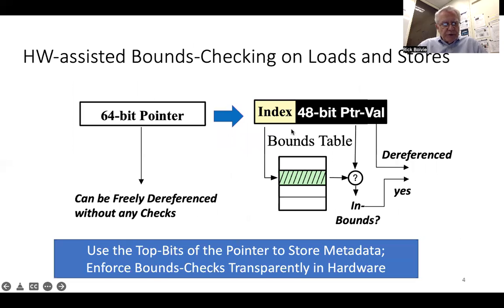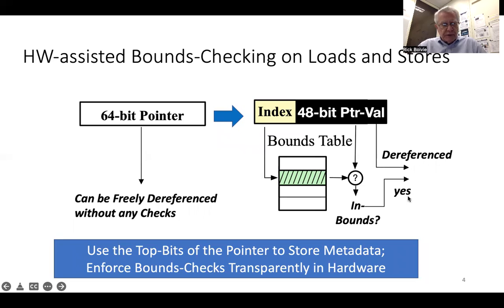In our design, we use some of the unused bits in a 64-bit pointer. Note there are unused bits typically because very few programs use 2^64 bytes of address space. We use some of those unused bits to store metadata — in this case, an index into a bounds information table — so that when a pointer is dereferenced, we can determine if a reference is in bounds or out of bounds by using that index to look up our bounds information table.